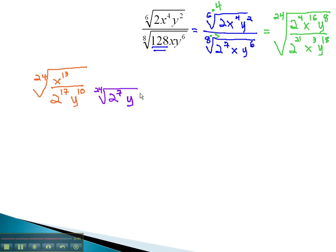We have 10 y's, which means we need 14 more y's in the denominator. Multiplying by the 24th root of 2 to the 7th y to the 14th,